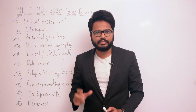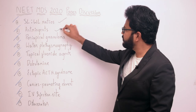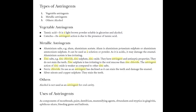Moving on to the next question pertaining to astringents. Astringents are used to precipitate proteins — agents that react with and precipitate proteins in superficial cells, forming a protective covering on the surface. This has the following functions: protection against bacteria and irritants, decreasing oxidation, and addressing capillary oozing when applied to bleeding surfaces.